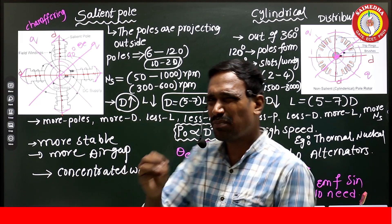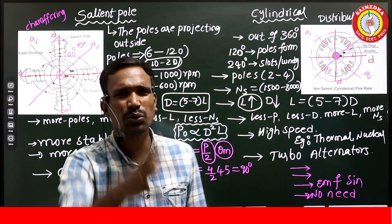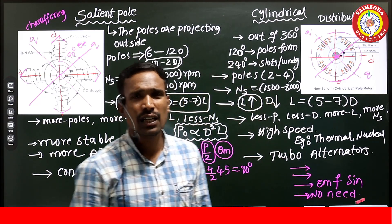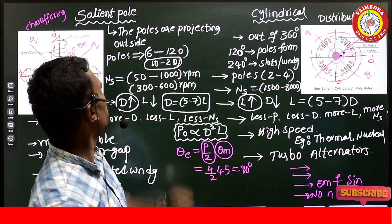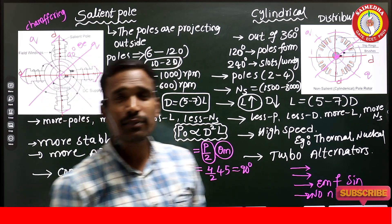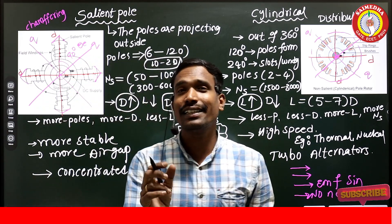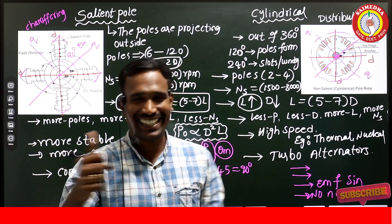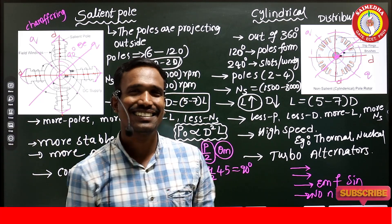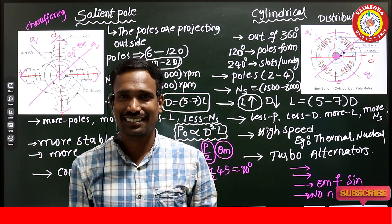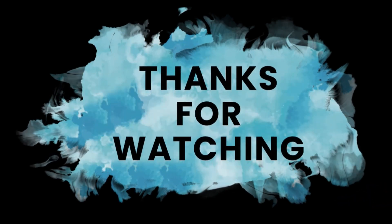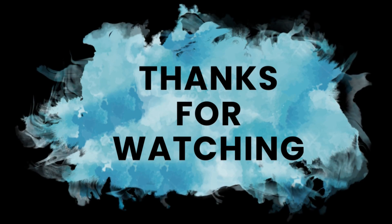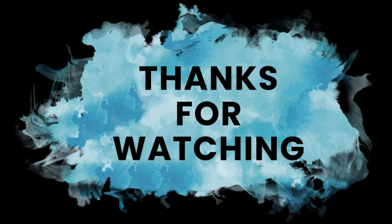These are the basic concepts. This covers the differences between salient pole and cylindrical synchronous rotors. Thank you, guys.